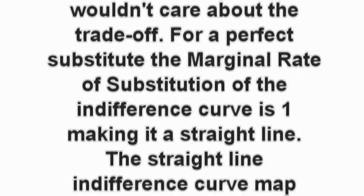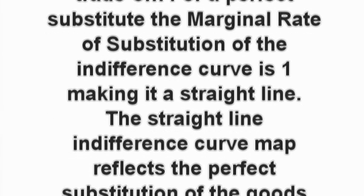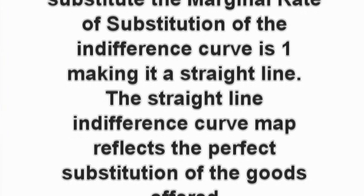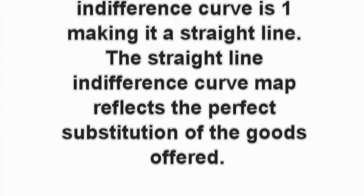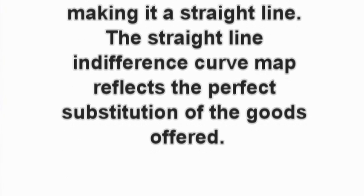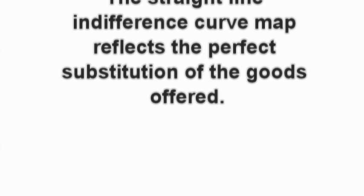For a perfect substitute, the marginal rate of substitution of the indifference curve is 1, making it a straight line. The straight line indifference curve map reflects the perfect substitution of the goods offered.